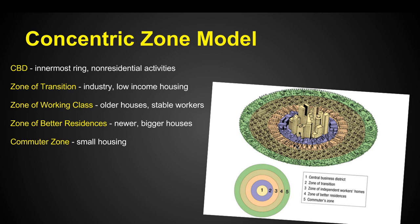Just away from the center, as the city grew, we've got industry and low income housing, which set up because it was a little less expensive at that time and close to the city's population. Out from there, we've got the zone of the working class — older houses, stable workers transitioning in to work in the factories. Outside of that is the zone of better residences, with newer, bigger houses on cheaper land. And then beyond that is the commuter zone, where people commute all the way into the CBD or inner ring.